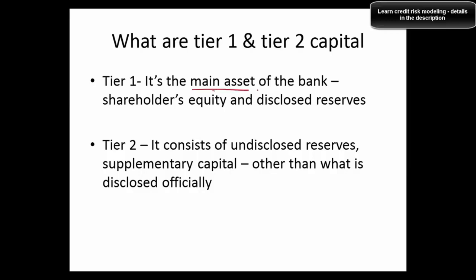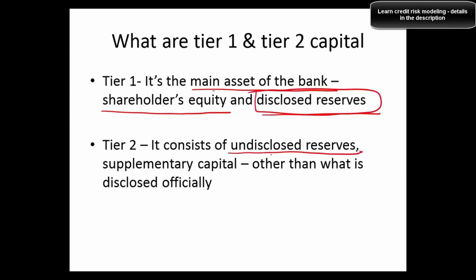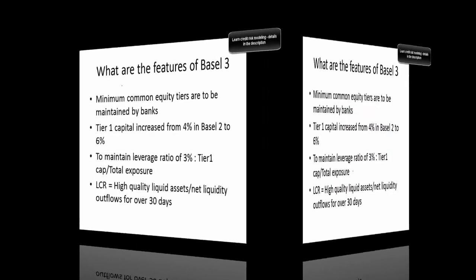What are Tier 1 and Tier 2 capital? Tier 1 capital is the main asset of the bank, which includes shareholder equity and disclosed reserves. Tier 2 capital consists of undisclosed reserves and supplementary capital — capital not disclosed officially by the bank. It is not a large amount, but that is what comes under Tier 2 capital.